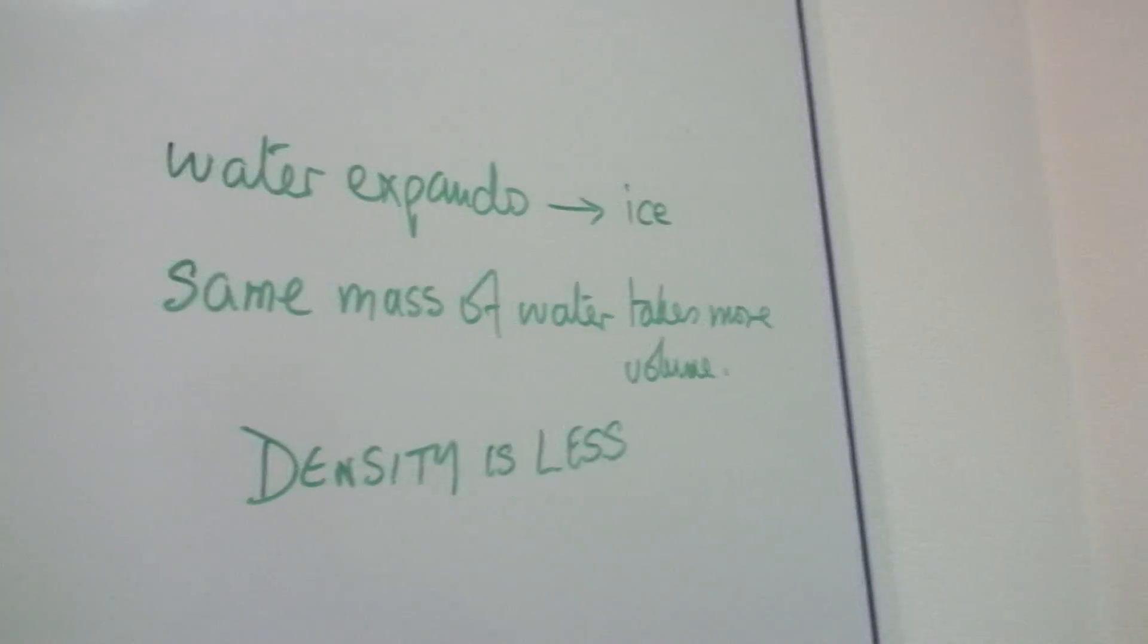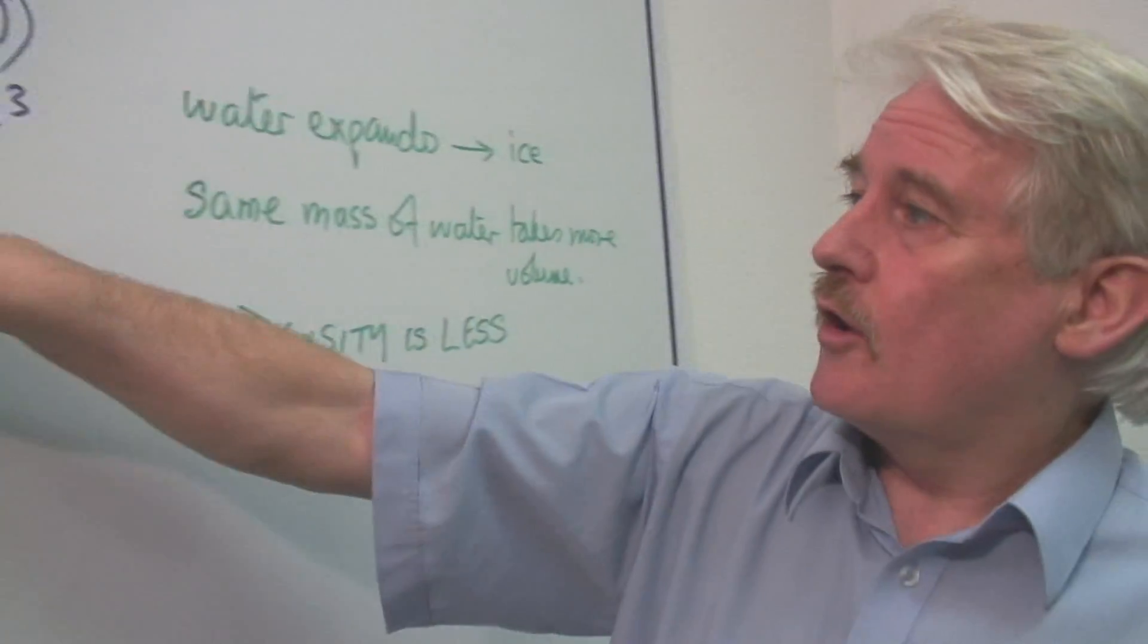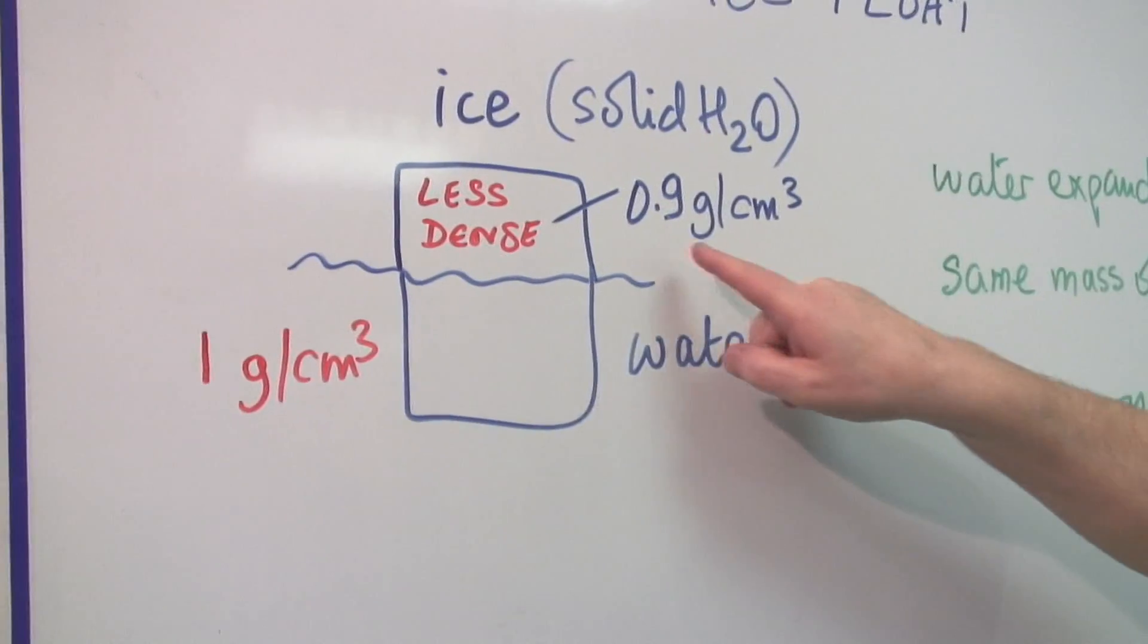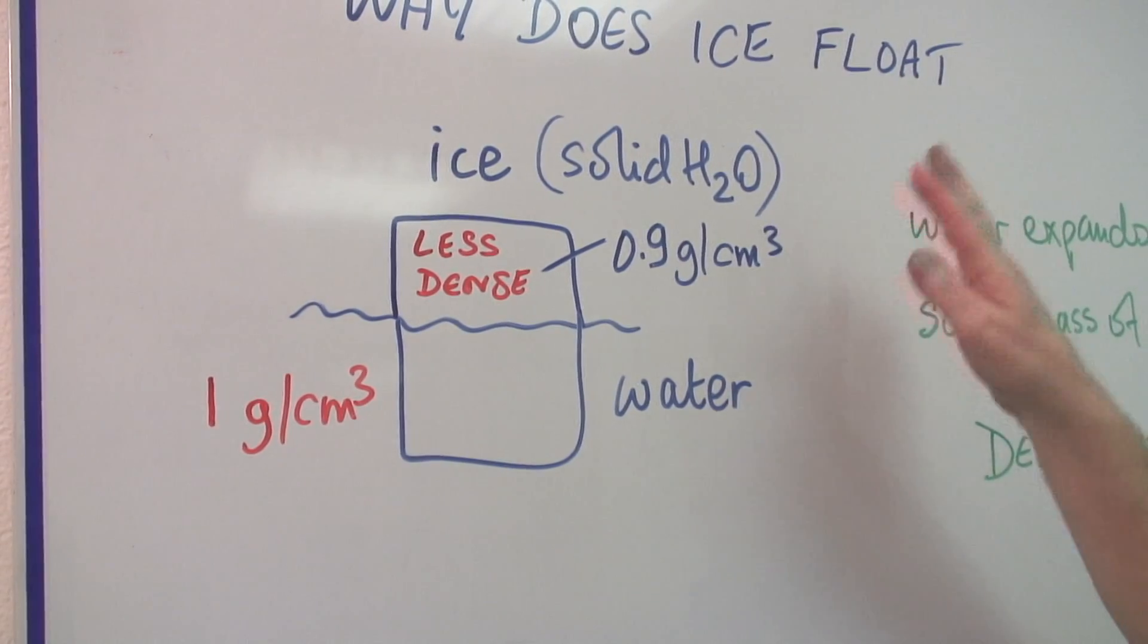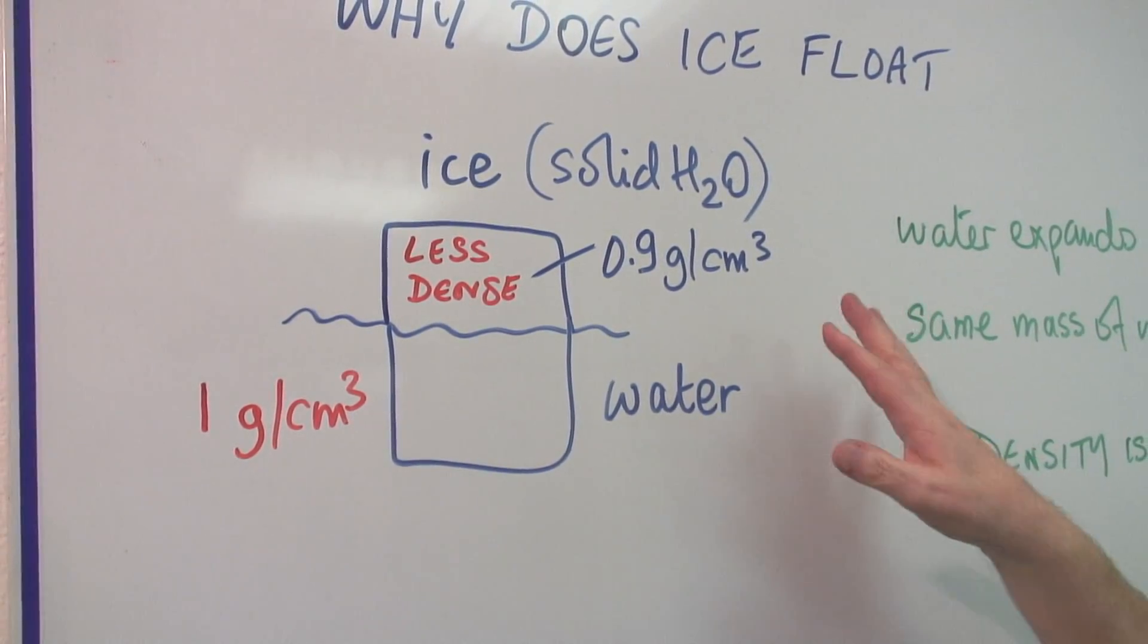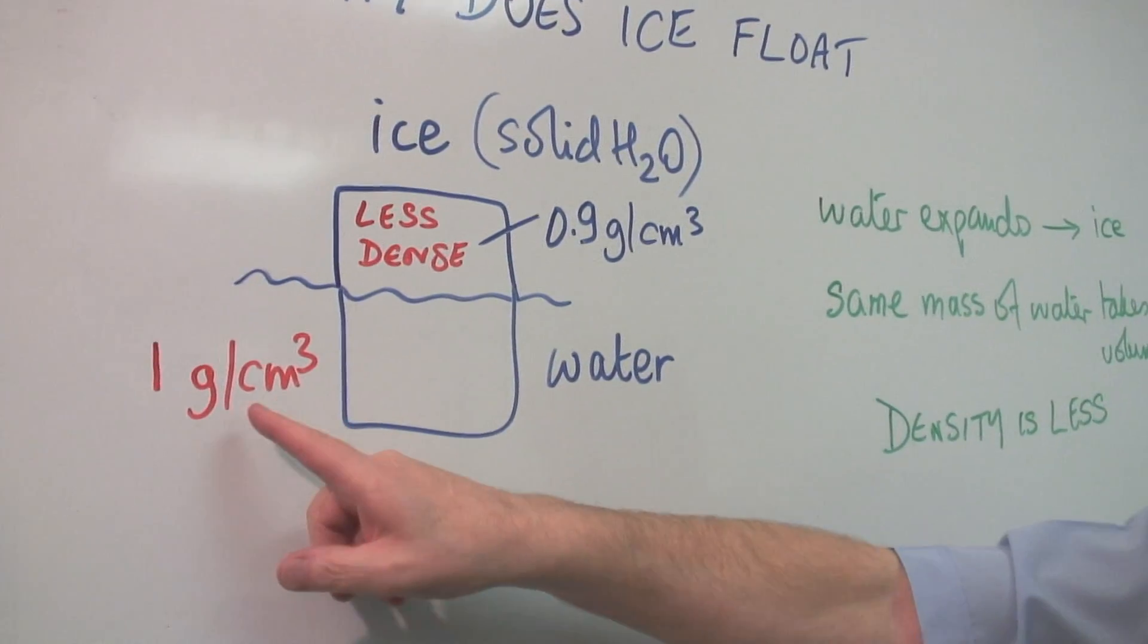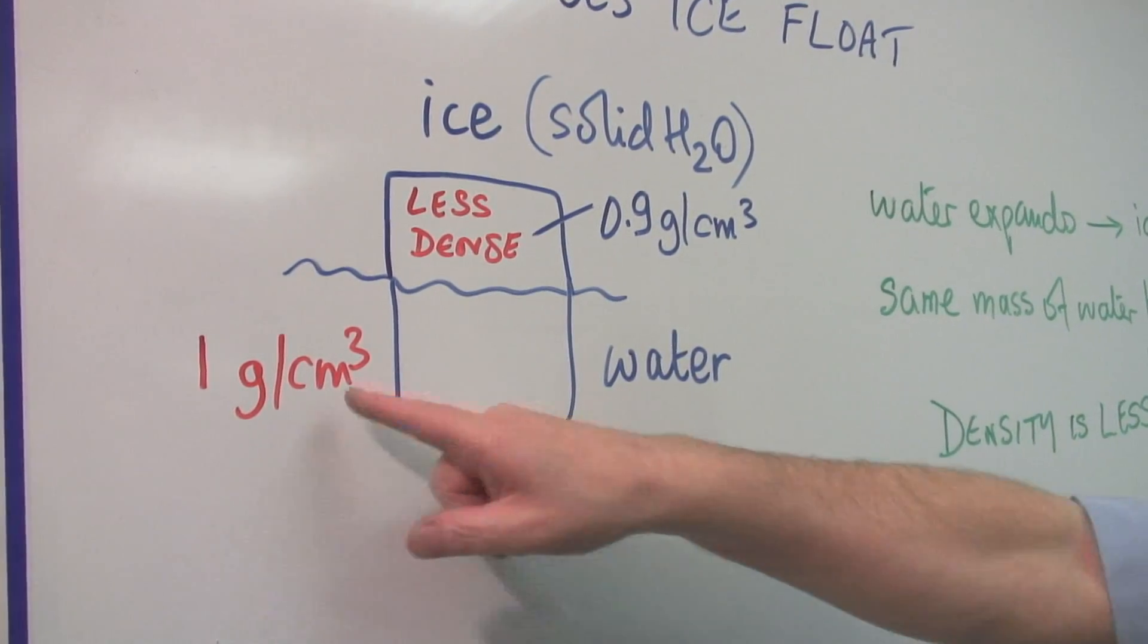Now here on the diagram we can see we've got ice and its density is about 0.9 grams per centimeter cubed or maybe a little bit more. It depends on the water. And water's density is one gram for every centimeter cubed.